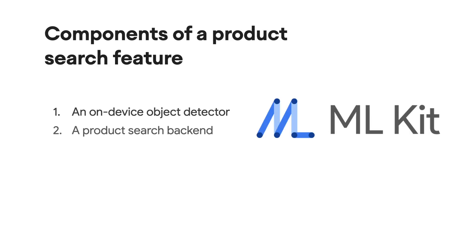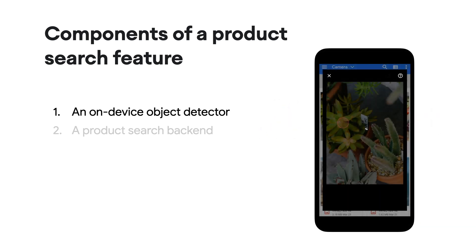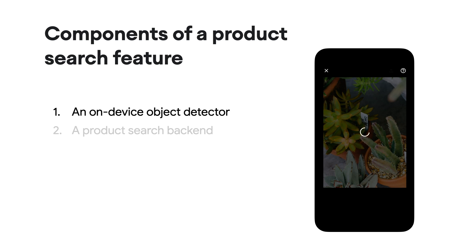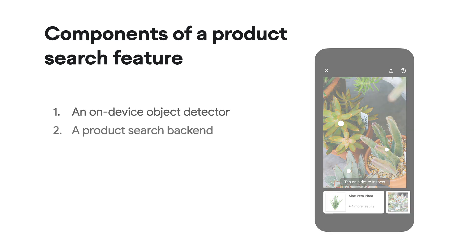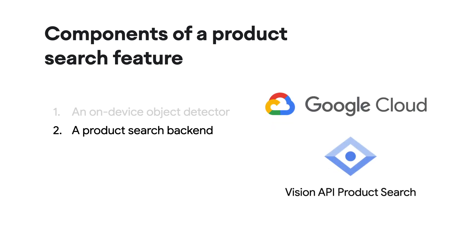There are two components to build this feature. The first one is an on-device object detector to identify the prominent objects in the image and suggest to the users which object they want to search for. Later in this learning pathway, I'll show you how to build this component using the ML Kit object detection and tracking API. We'll also learn some Material Design best practices in building an on-device object detector.